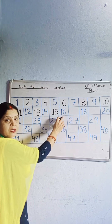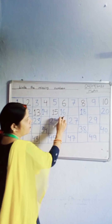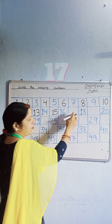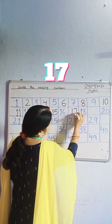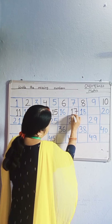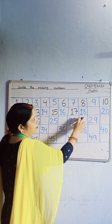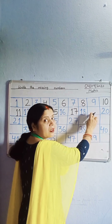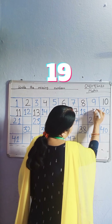Next, which number? 16. Which number is missing? 17. Write down 17. Which number? 18. Which number is missing? 19. Write down 19.